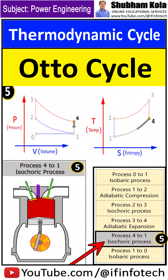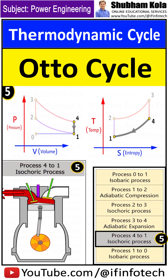Process 4 to 1 is an isochoric process where heat is rejected from the air at constant volume. As the heat leaves the gas, the molecules lose kinetic energy, causing decreasing pressure.